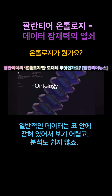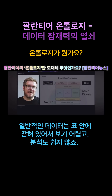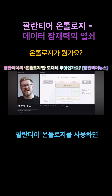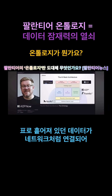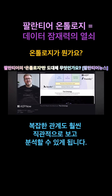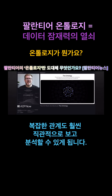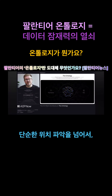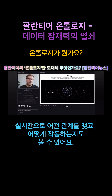Traditional data is often trapped in tables — rows and columns that can be hard to navigate and understand. Palantir's Ontology turns these tables into interconnected networks, making it easier to visualise and analyse complex relationships. Think of it like upgrading from a static map to an interactive GPS system. You don't just see where things are; you understand how they connect and interact in real-time.